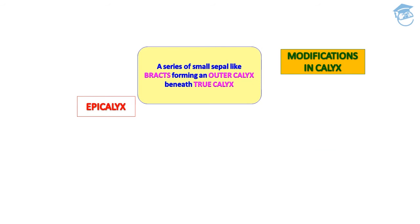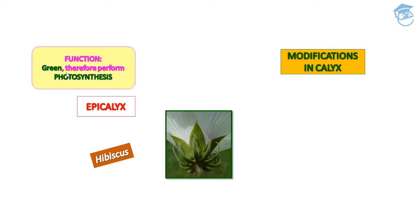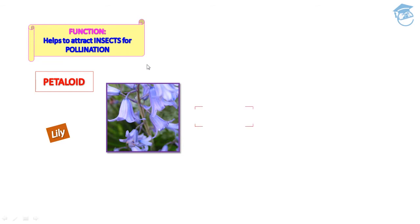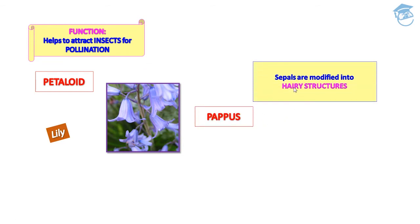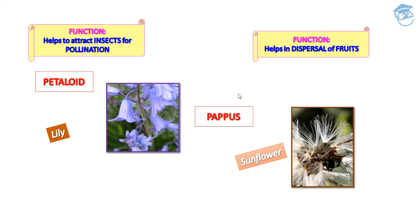Modifications in calyx: first, epicalyx — a series of small sepal-like bracts forming an outer calyx surrounding the main calyx, seen in Hibiscus; being green, epicaly performs photosynthesis. Second, petaloid — when sepals are brightly colored like petals, seen in lily; functions to attract insects for pollination. Third, pappus — sepals modified into hairy structures, seen in sunflower; functions to help in dispersal of fruits.